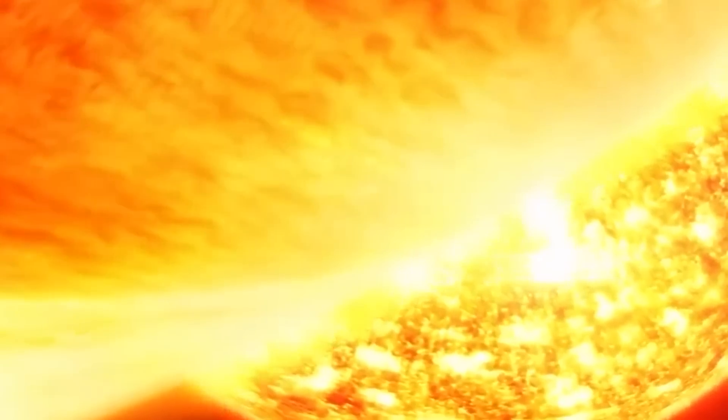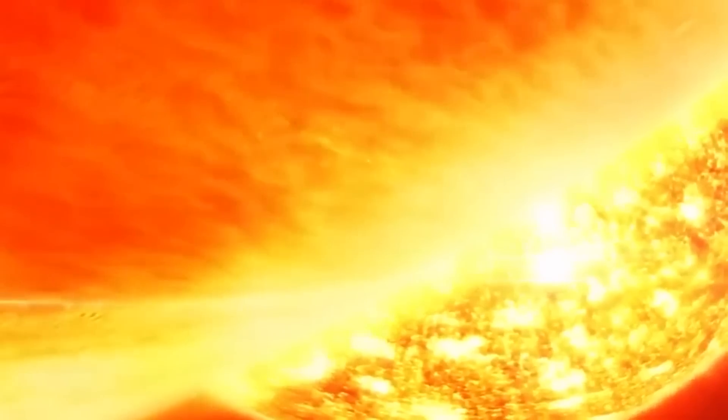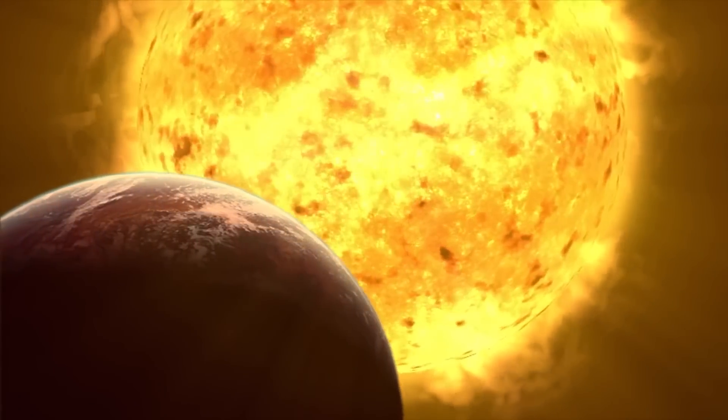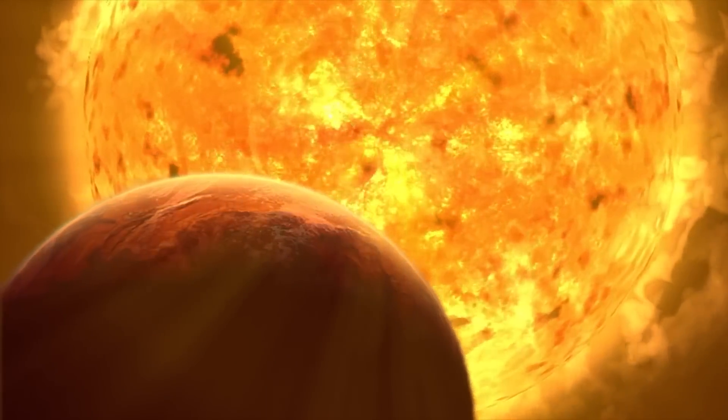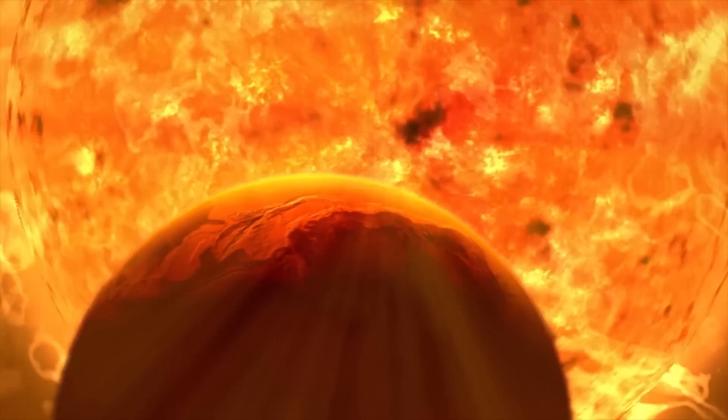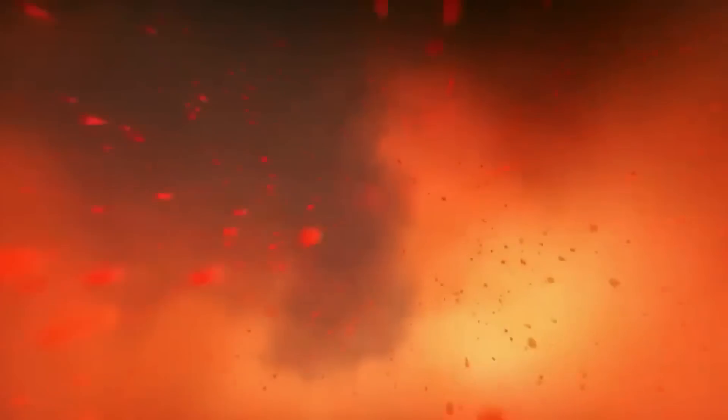As a result, WASP-76b's dark side is nearly twice as cold. On this exoplanet, strong winds develop because of the vast temperature disparity. As a result, the wind carries the iron vapor from the planet's hotter side to its cooler side. It also rains molten iron as this vapor cools.